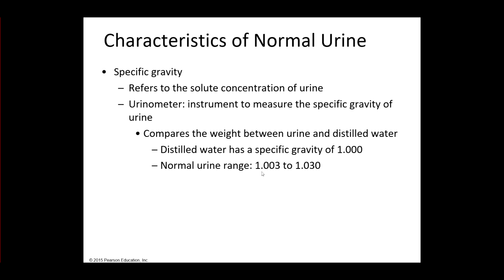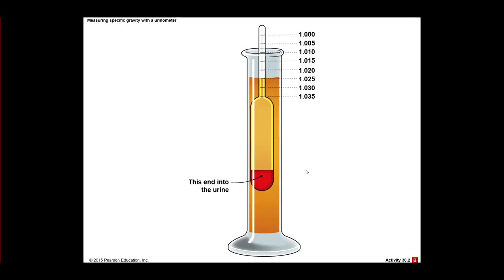Then urine obviously does have solutes dissolved in it. And that means it's going to be higher than 1 normally. So it ranges from 1.003. This would be a dilute urine to 1.030. That would be a more concentrated urine. If you were dehydrated, you're probably going to be more on this end over here. This is what we call the specific gravity.